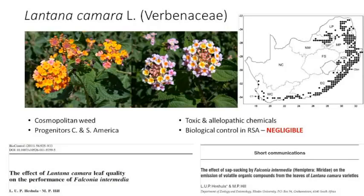My case study is Lantana camara. You know this cosmopolitan weed — it's found in South Africa in all but two provinces. Importantly, its ancestors are thought to be in Central and South America, so what you find as Lantana camara is not really what you find in the native country. It's completely different genetically, and I think that's really important to note.